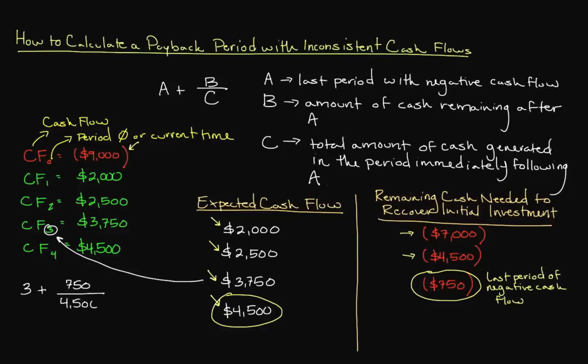We simply substitute these values into their corresponding variables and solve. Doing so gives us a payback period of 3.17 years, or 3 years and 2 months if you convert the decimal into months. Whether this payback period is acceptable will depend largely on the other opportunities we have to generate positive cash flow.